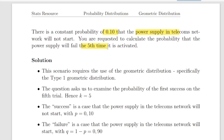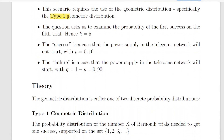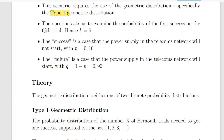That is the occurrence of the first success on the fifth trial. This scenario requires the use of the geometric distribution, specifically the Type 1 distribution. The question asks us to examine the probability that the first success will occur on the fifth trial — that is essentially the concept behind the Type 1 definition: what is the probability that the first success will happen on a particular trial?